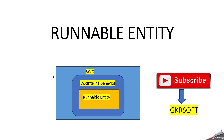As you can see in this picture, every software component has software component internal behavior, and software component internal behavior has runnable entity. Now you will come to know about where runnable entity will get configured — it will be configured inside software component internal behavior. If you want to understand more clearly about what all other things will be there inside the software component internal behavior, I have already published one video. You can watch it.